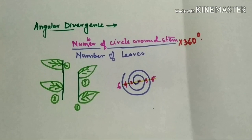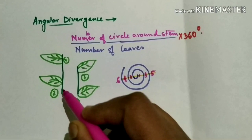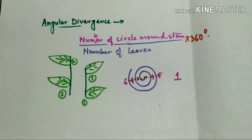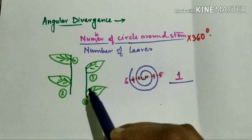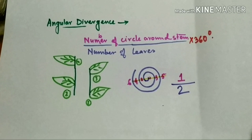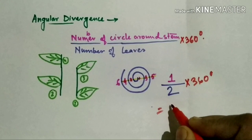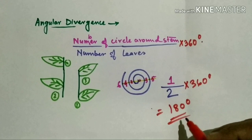This is Distichous phyllotaxy. The number of circles around the stem is one, and within that circle, two leaves are present. So the formula gives us: 1 divided by 2, multiplied by 360 degrees, which equals 180 degrees Angular Divergence. This is an example of Distichous phyllotaxy.